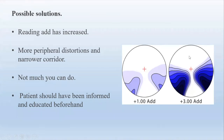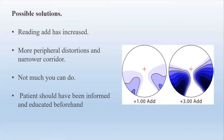Had you educated the patient beforehand about what to expect, it would have made your job easier when he came to collect. You could confirm you predicted this outcome, making it more acceptable. Alternatively, you could upgrade the lens design. The key point: be aware of what happens when prescriptions change and when reading adds increase, and always communicate this to the patient before dispensing.